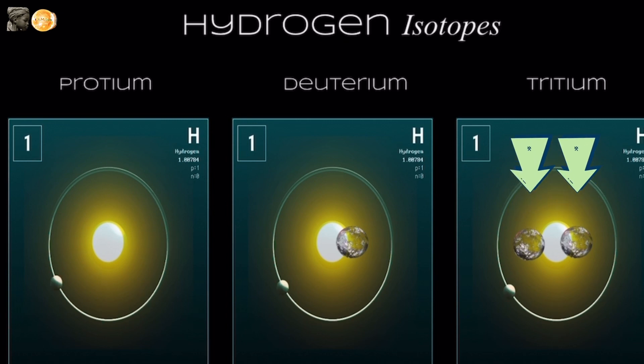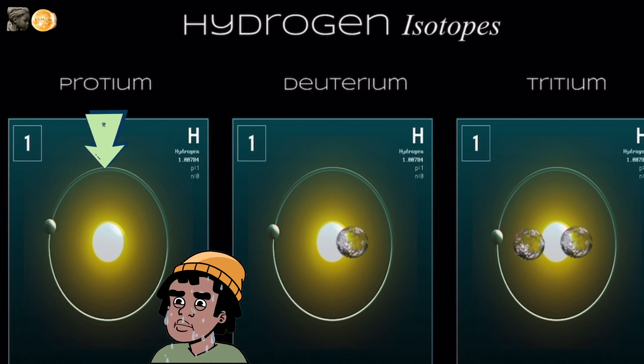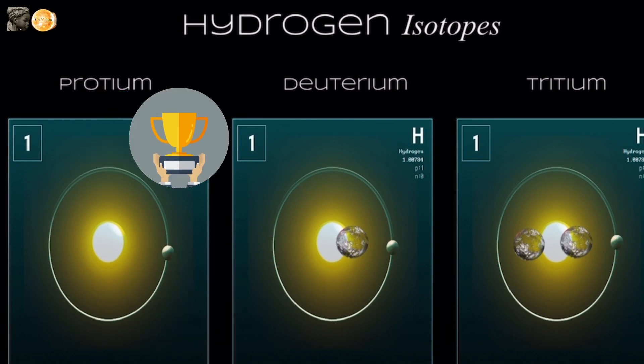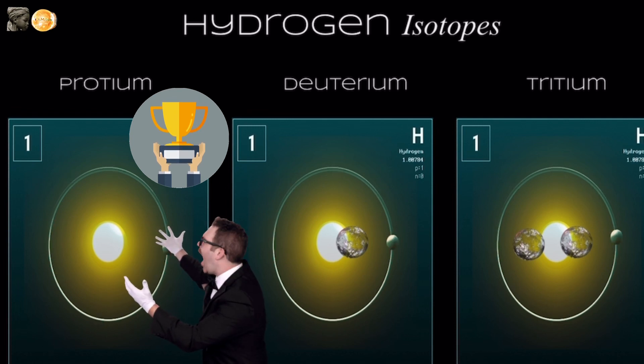Here's another version with two neutrons in it. That's called tritium. And here's one version with no neutrons at all. You heard that correct. Hydrogen is about the only atom in the world that can operate without a neutron.